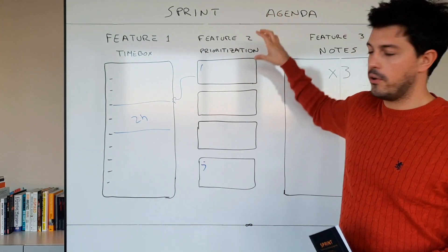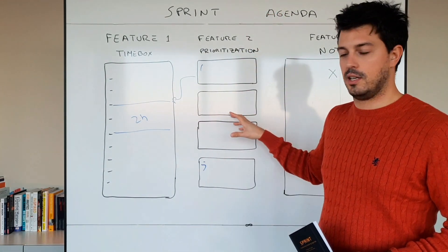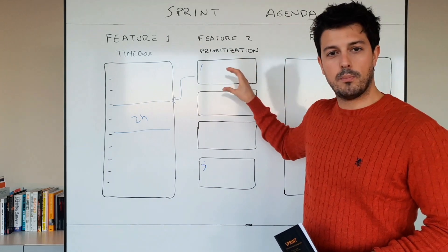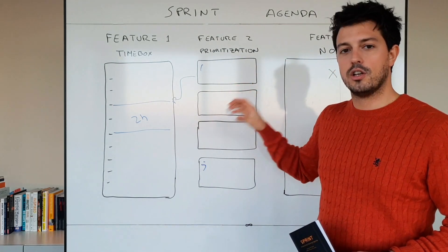Then I have a prioritization matrix inside of the agenda that is really simple, where you prioritize the most important high-impact tasks to do today.